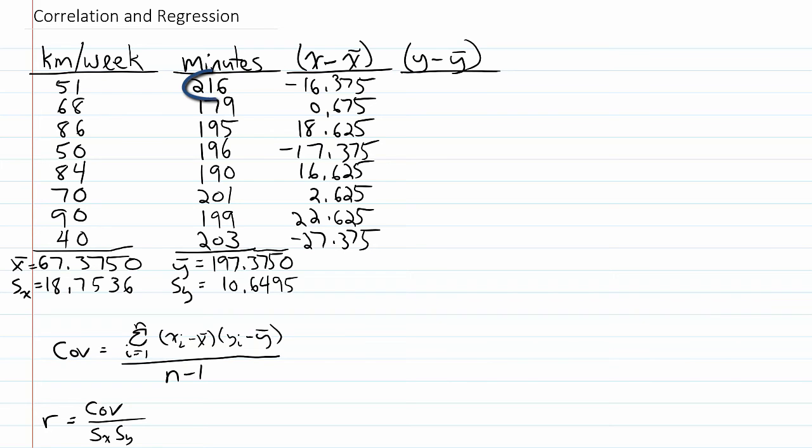For the first observation, I take 216 minus 197.375, and what I get is 18.625. And I'll continue with the remaining observations.